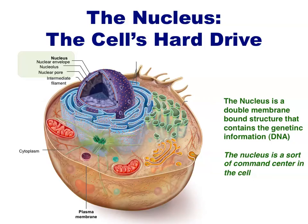Our genetic information in the form of DNA is found in the nucleus of the cell. The nucleus is a double membrane structure, which keeps the precious DNA safe from other molecules in the cell. There are openings in this structure, known as the nuclear pores, which allow molecules to enter or leave the nucleus.